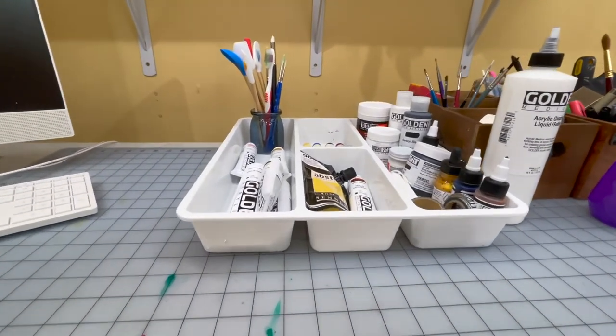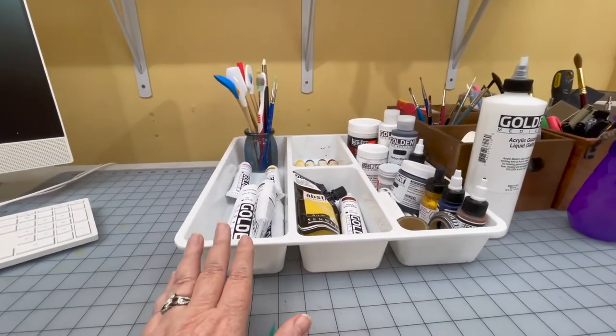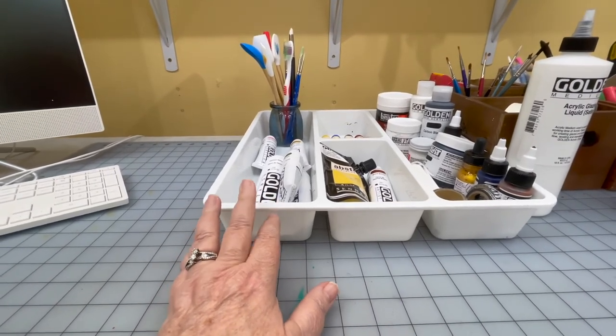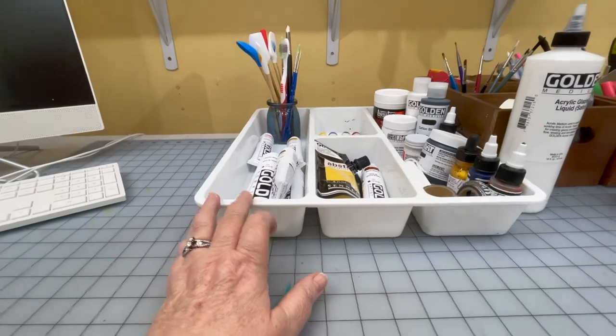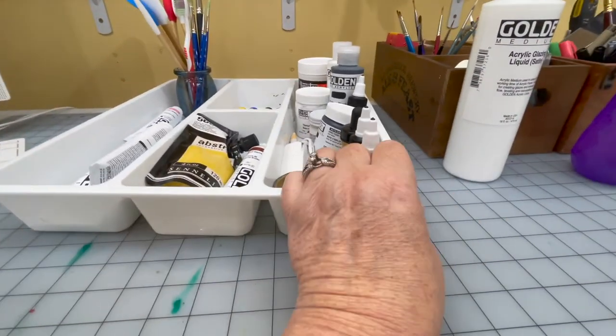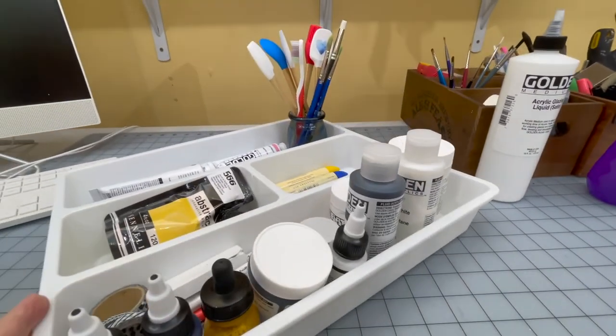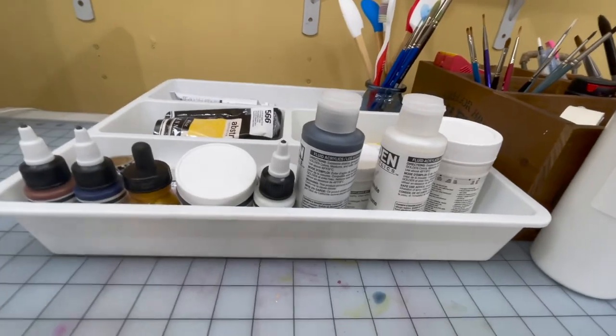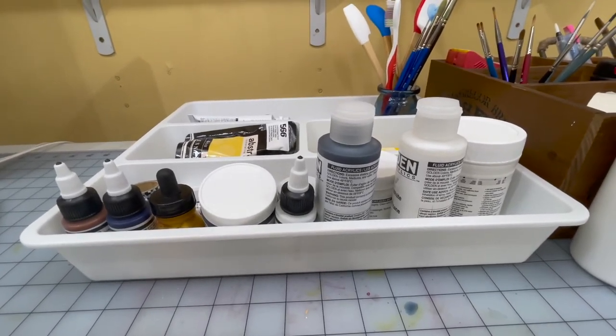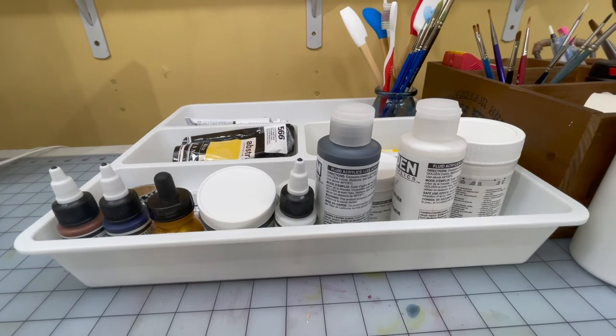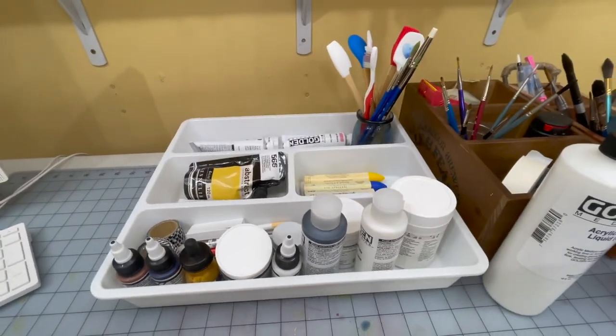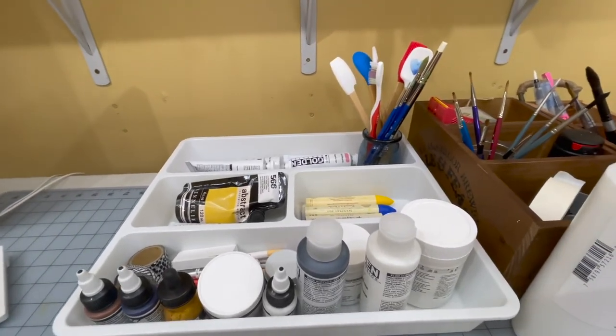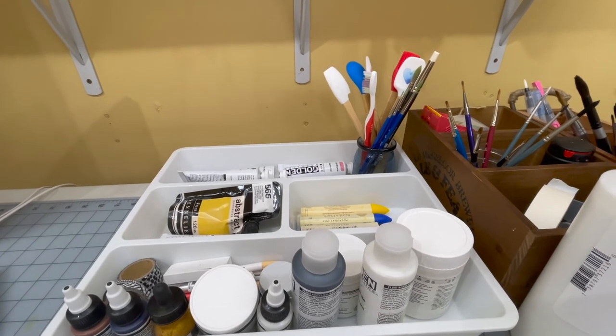In the future, I might try to find a different storage solution for my mixed media supplies over on this table other than this, because this is just too big. I might end up, maybe if I turn it this way, it might be better. I think I would like a wooden flatware organizer better because I think it would just be more aesthetically pleasing with the other wood items. But I'll let you know that in the future.